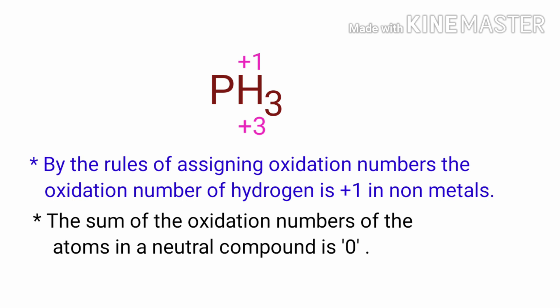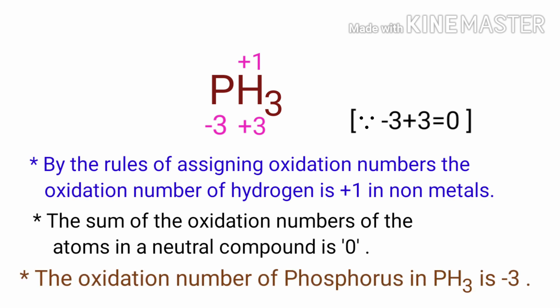So, the number under phosphorus must be -3. Therefore, the oxidation number of phosphorus in PH₃ is -3.